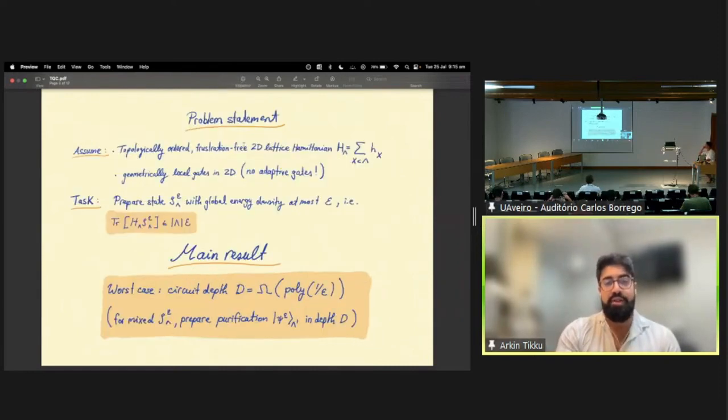The particular lattice models that we were looking at, as I said before, were topologically ordered lattice models in two dimensions. And also, we have an assumption on the structure of the ground space. Namely, we assume that they're frustration-free. That the global ground state is also a ground state of all the local subspaces, a ground state of all the local terms. Furthermore, we assume that we're preparing our low energy state only using geometrically local gates on some 2D architecture. And furthermore, we will not allow for adaptive gates, which means we're not allowing for mid-circuit measurement and feedforward.